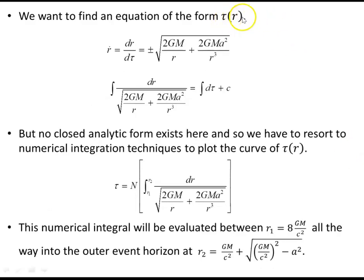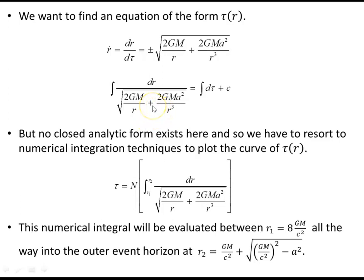We want to find tau as a function of r. Since r dot = dr/d tau equals plus or minus the square root of our expression, we separate differentials to obtain an integral with a constant of integration. However, no simple closed analytic form exists, even using software packages, so we must resort to numerical integration techniques to find the anti-derivative and plot it.